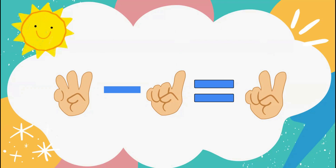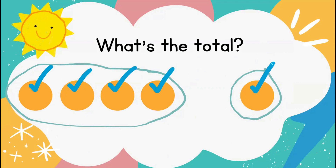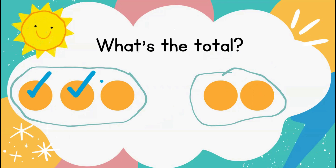Let's take a look at our total. Here I have 4 counters over here and 1 counter over here. I want to combine these and find the total. Count with me: 1, 2, 3, 4, 5. The answer is 5. Here I have a group of 3 orange counters and 2 orange counters — I want to know the total. Let's count all of them together: 1, 2, 3, 4, 5. Good job — there is a total of 5 counters.